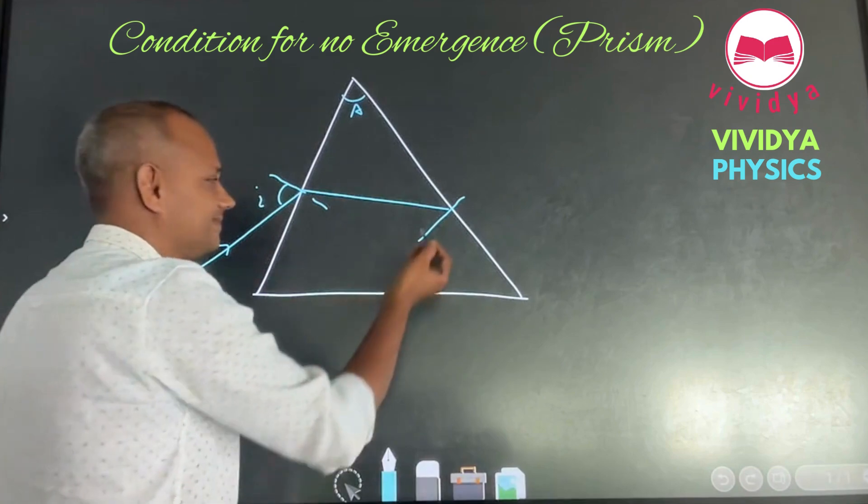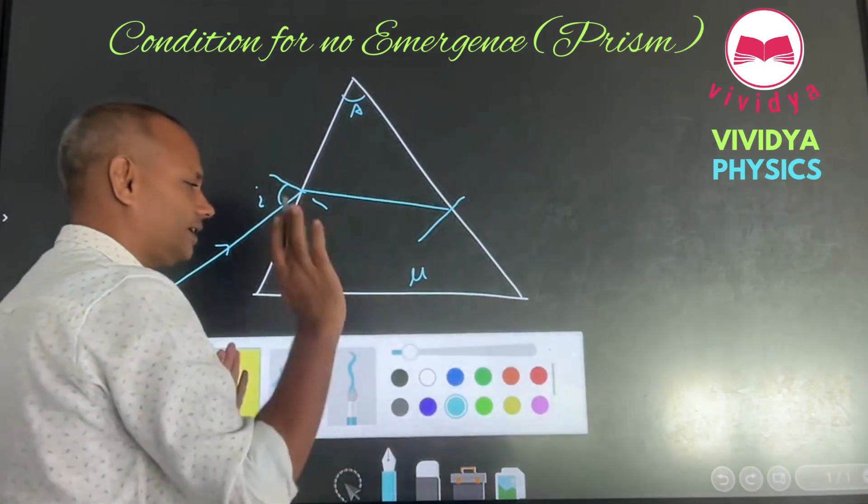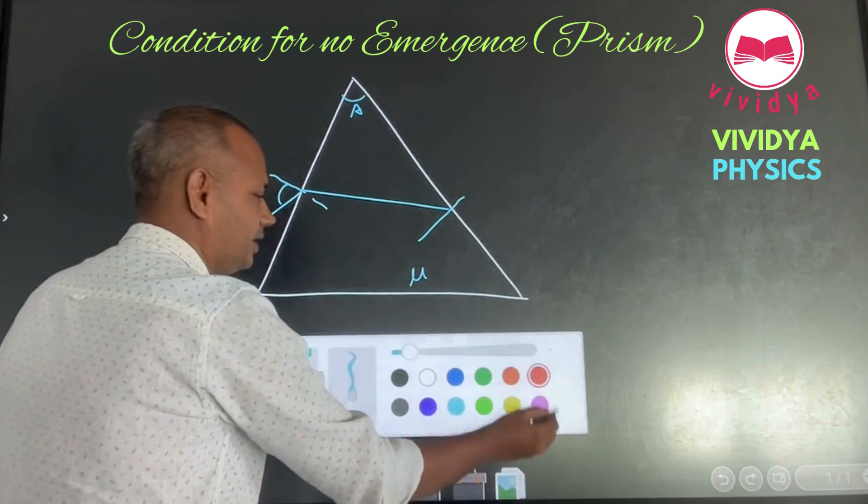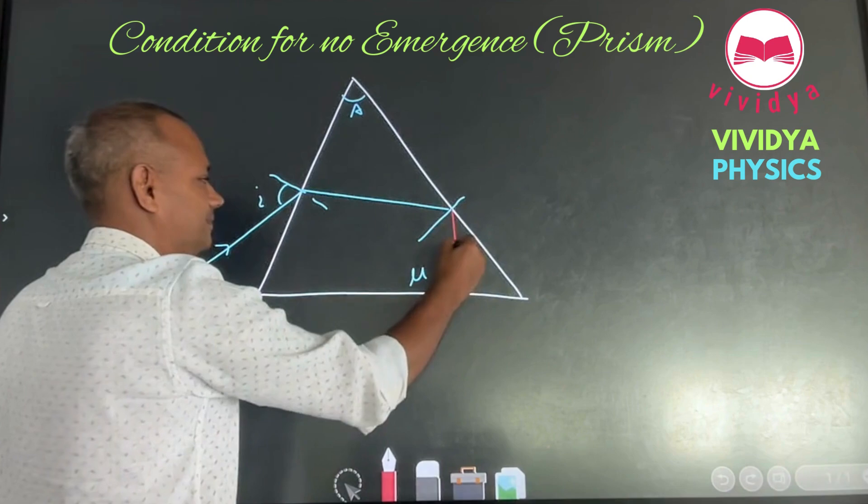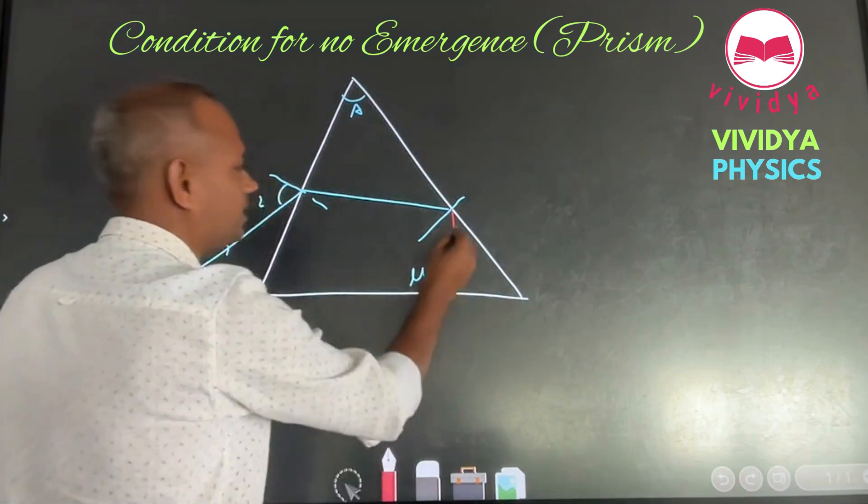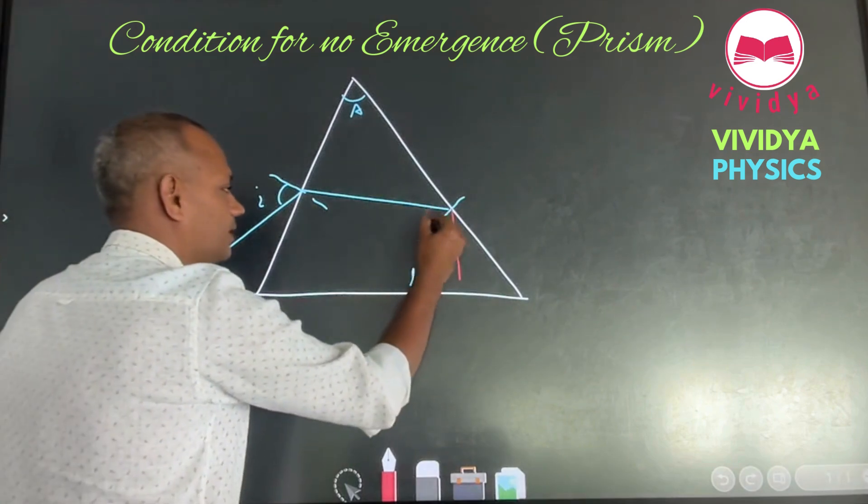What will happen here? We are expecting that whatever is the angle of incidence here we need TIR. Here TIR will happen. What is the condition for TIR?